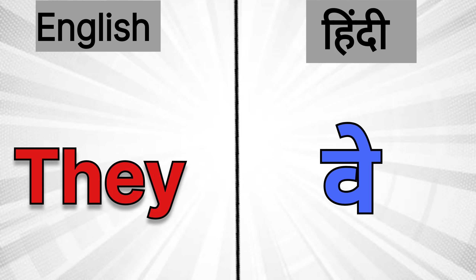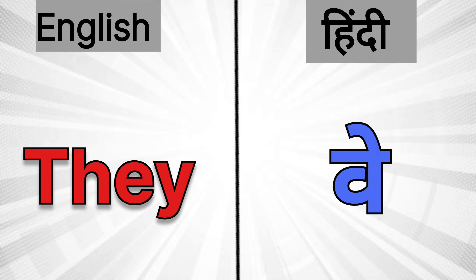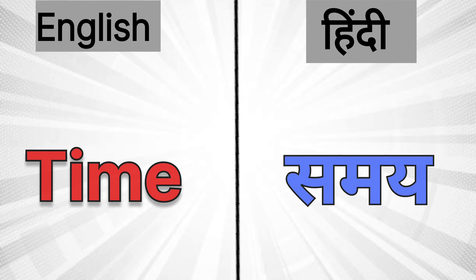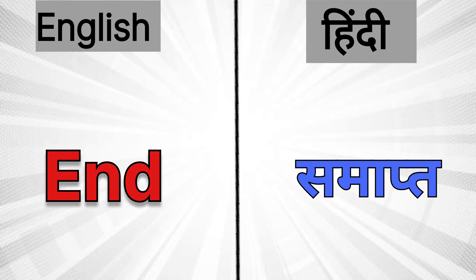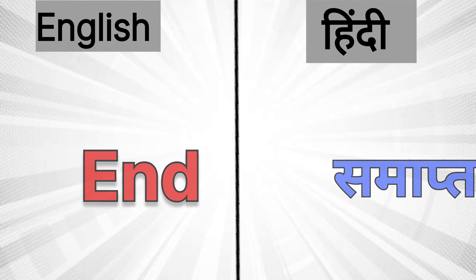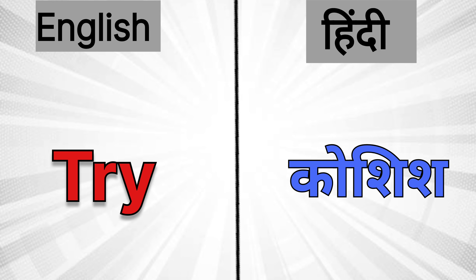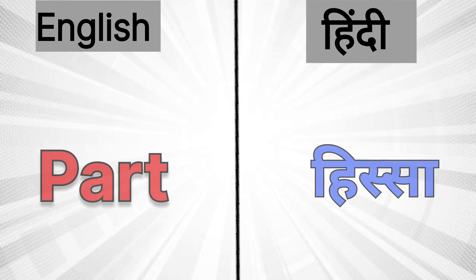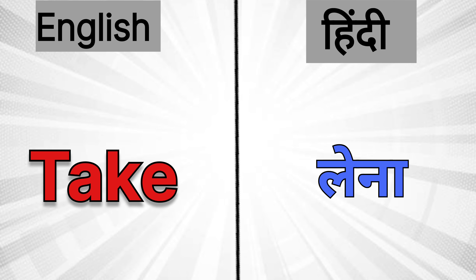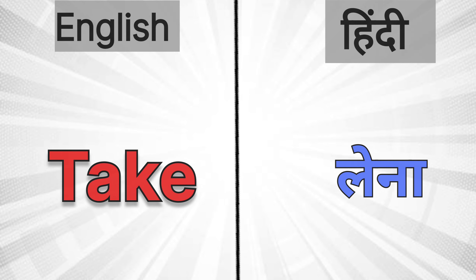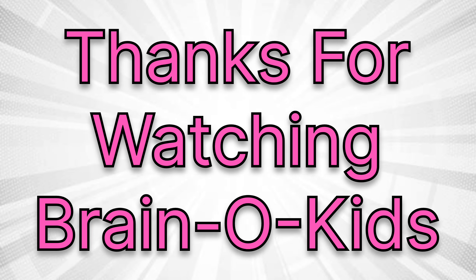In English: 'they' — In Hindi: We (ve). In English: 'time' — In Hindi: Summer (samay). In English: 'and' — In Hindi: Summer (aur). In Hindi: 'tried' — In Hindi: Koshish. In English: 'part' — In Hindi: Hissa. In English: 'take' — In Hindi: Al/Lena.